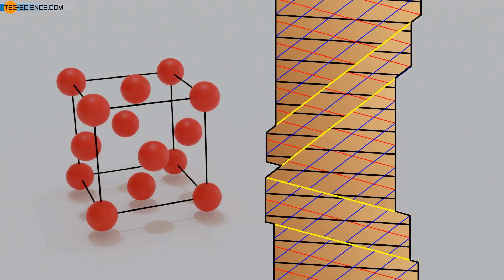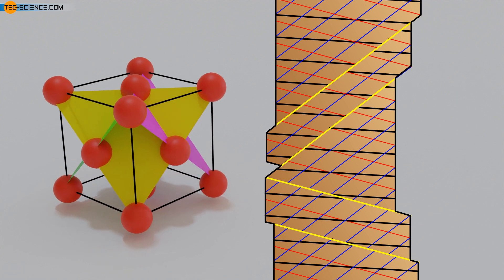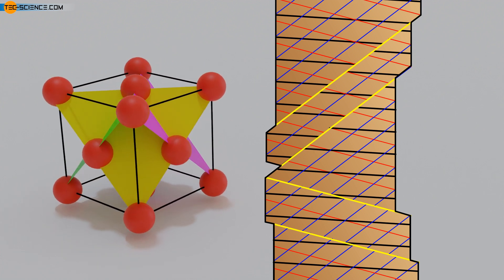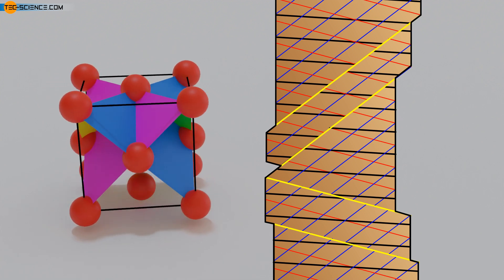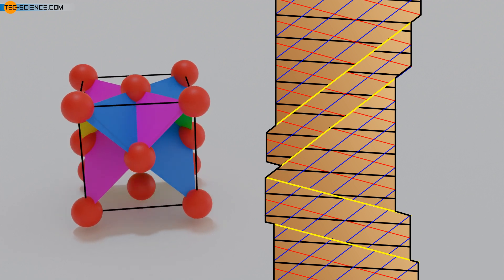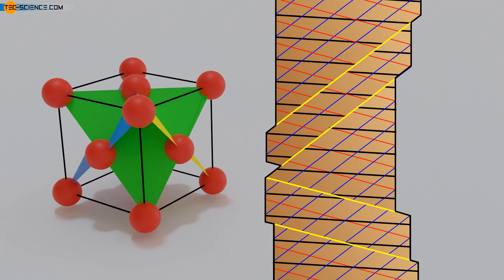In face-centered cubic single crystals, the unit cells must be oriented parallel to the tensile axis. The colored areas of the unit cell show the symmetrically arranged main slip planes. Since slipping in this case takes place in several different slip planes, it is also referred to as multiple gliding. The crystal is deformed in different directions, and the slip planes emerge from the material surface at different angles and in different spatial directions. The superposition of these slip steps makes it impossible to distinguish the individual steps, so they are not visible to the naked eye.